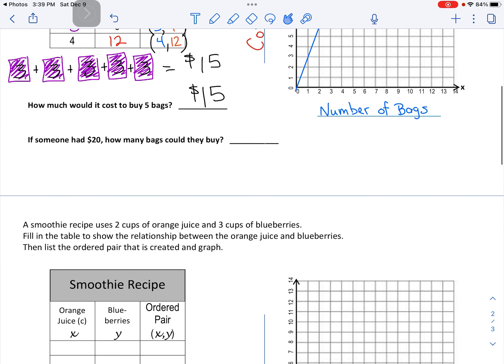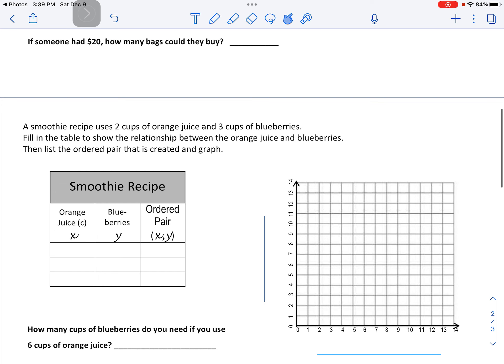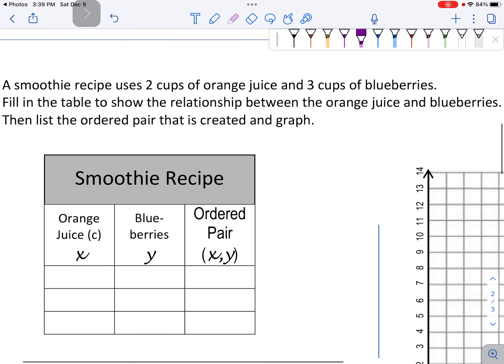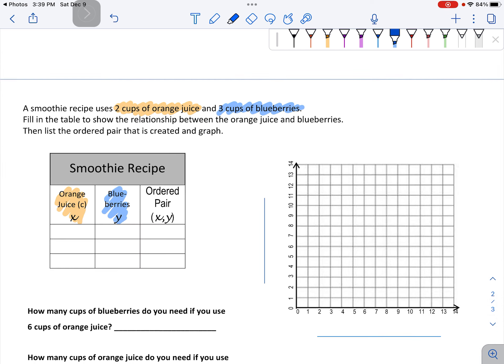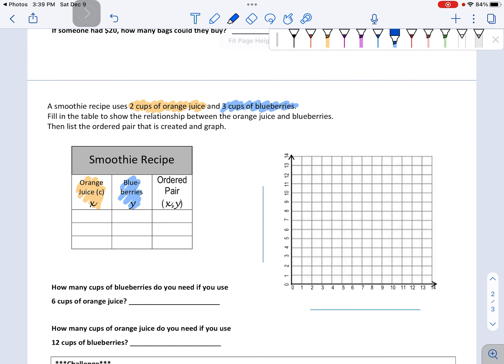The next problem is about smoothies. You really need to pay a lot of attention to the labels here. This one says two cups of orange juice. Here's my orange juice. And this one says three cups of blueberries. Here's the blueberries. You'll need to do the ordered pair and fill in the graph and answer the questions.